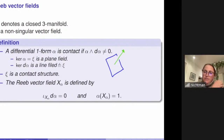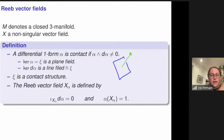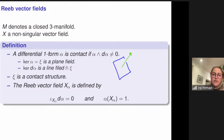The kernel of alpha is one-dimensional, and the condition alpha wedge d-alpha non-zero means that these are transverse at every point. We call the kernel of alpha the contact structure. To alpha we can associate a vector field defined by being in the line direction defined by the kernel of alpha, normalized such that alpha of the vector field is equal to one.